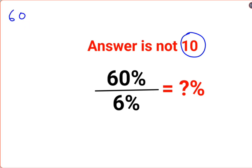See, whenever you have a percent sign, you can convert it into a number by dividing that percent by 100. So basically, you are doing 60 upon 100 divided by 6 upon 100.